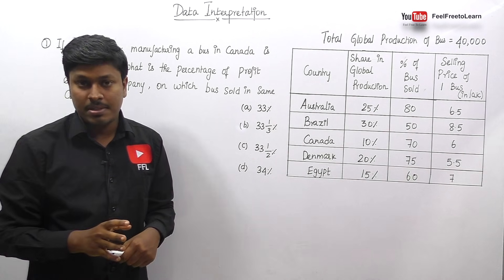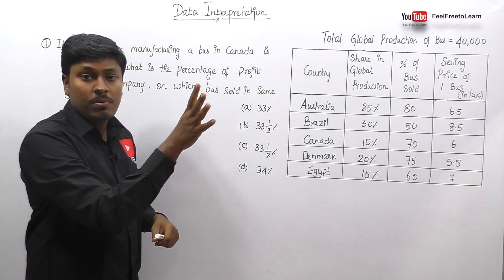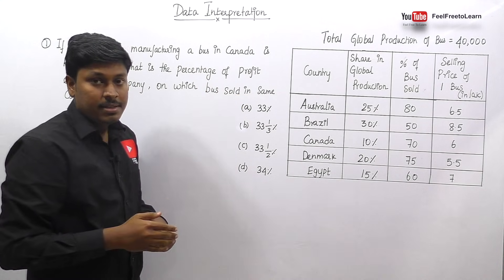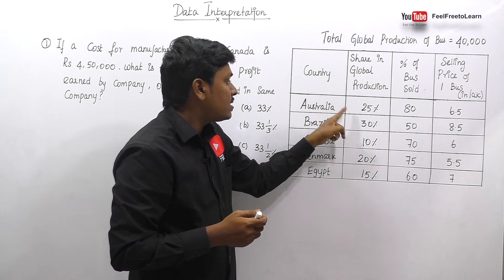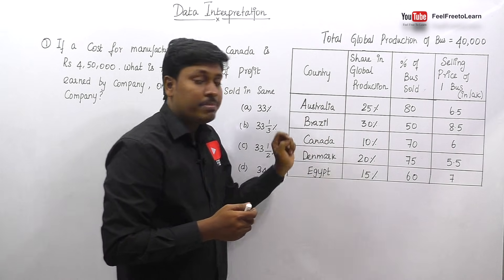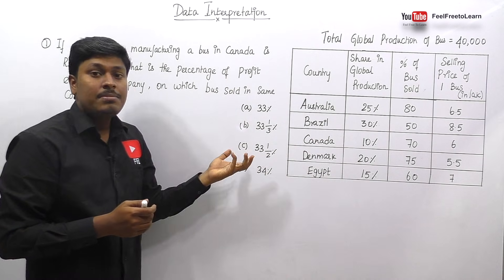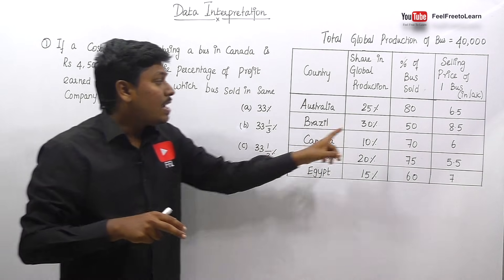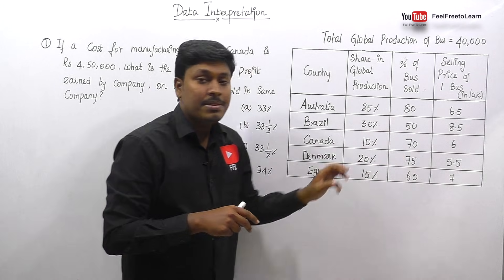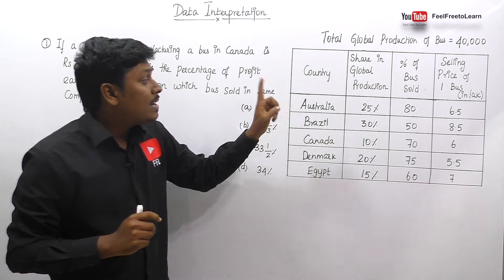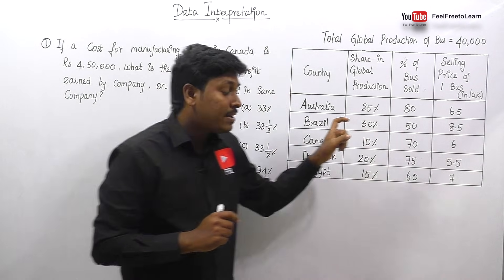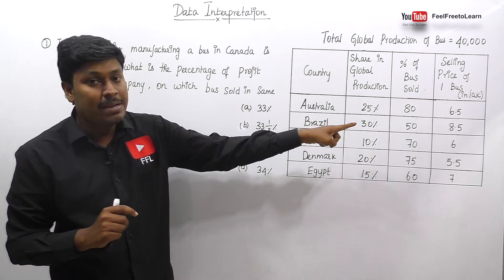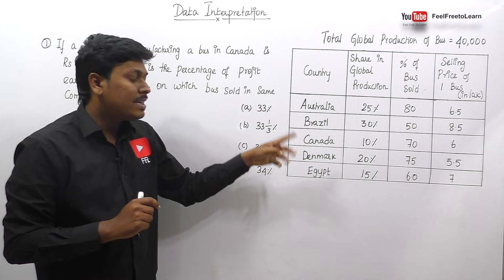Total 40,000 buses is shared globally into various countries — Australia, Brazil, Canada, Denmark, and Egypt — in percentages of 25% and 30% respectively. After getting all the buses, they are selling 80%, 50%, and 70% of buses sold. Australia is selling a single bus for 6.5 lakh, Brazil for 8.5 lakh, Canada for 6 lakh, and Denmark for 5.5 lakh.